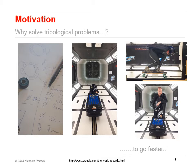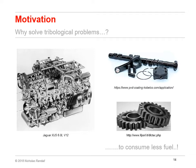Another tribological problem which we are continuously trying to improve is the internal combustion engine. One of the few remaining solutions to reduce fuel consumption is to reduce friction and wear between mating surfaces in the engine. This might be by applying low friction coatings on components, such as the diamond-like carbon coatings shown here, or by improving the efficiency of lubricants.